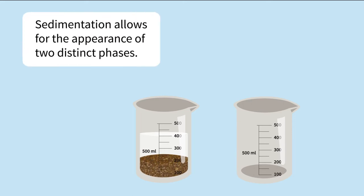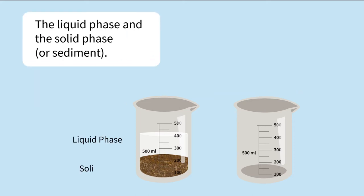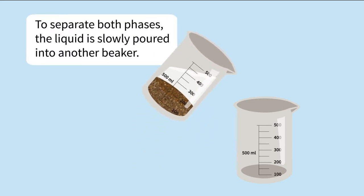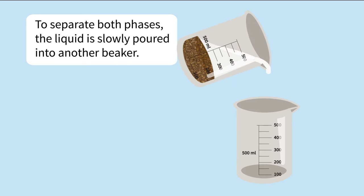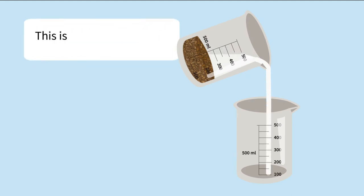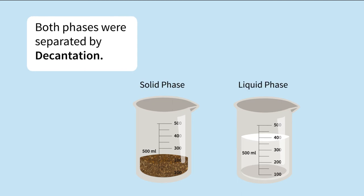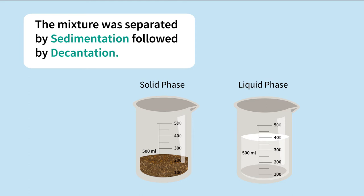Sedimentation allows for the appearance of two distinct phases: the liquid phase and the solid phase, or sediment. To separate both phases, the liquid is slowly poured into another beaker — this is called decantation. Both phases were separated by sedimentation followed by decantation.